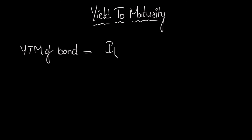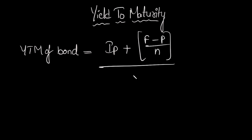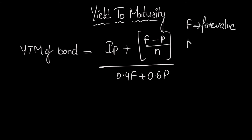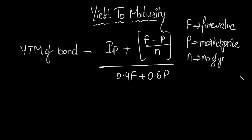Now let's discuss the formula. The formula for YTM of a bond is: YTM = [IP + (F - P) / N] / (0.4F + 0.6P). Here, F is the face value, P is the market price, and N is the number of years to maturity. I'm writing 'IP' for interest payment rather than 'I' so you don't confuse the coupon payment with a variable.